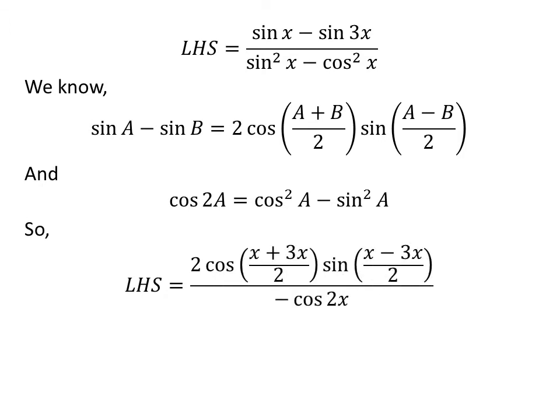The application of the above identities gives us the left hand side of the equation is equal to 2 times cosine of (x plus 3 times x) upon 2 times sine of (x minus 3 times x) upon 2, upon minus cosine of 2 times x.